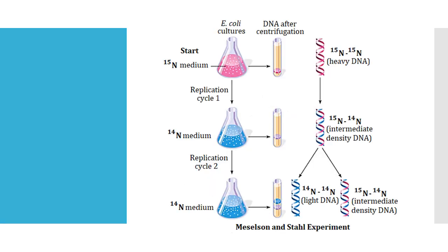Now we will discuss the Meselson and Stahl experiment. First, these are the nitrogen isotopes — N14 and N15. These are the two isotopes of nitrogen; N14 is the normal isotope and N15 is the heavy isotope. N15 is not radioactive, but the density of N15 is more than that of N14, that's why it is called the heavy isotope of nitrogen. These two isotopes were used by Meselson and Stahl in their experiment.